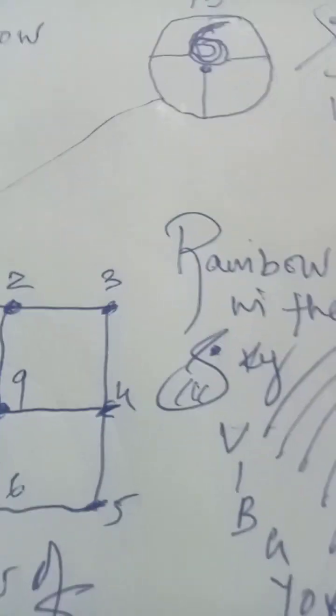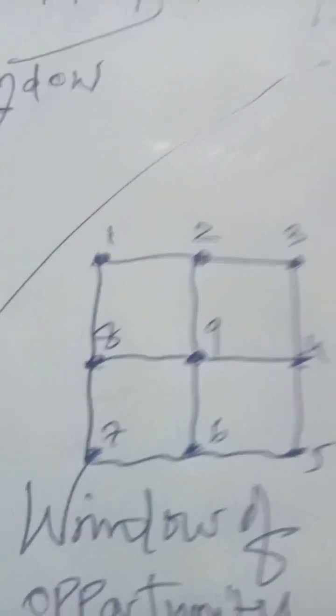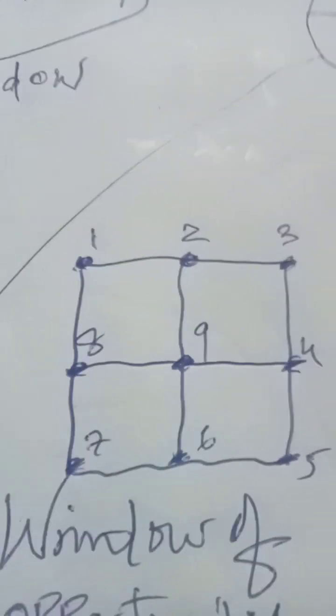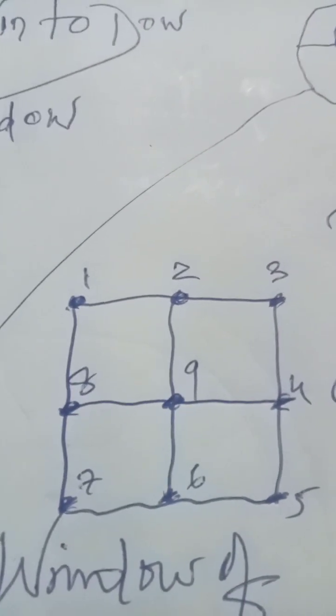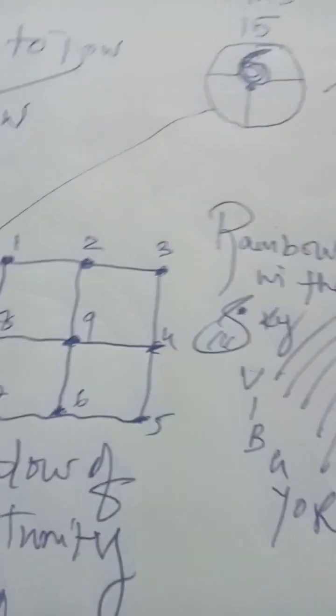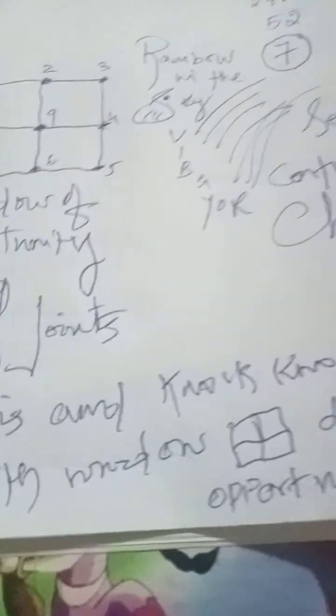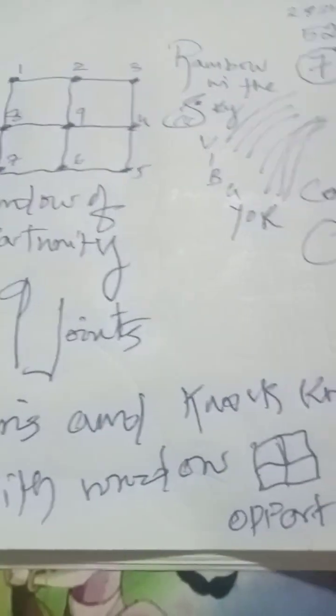So what is a window? Window is something with four partitions, and how many joints are there? There are nine joints: 1, 2, 3, 4, 5, 6, 7, 8, 9 joints. Now this nine, when the nine joins and says knock knock on the window, it gives you a window of opportunity.